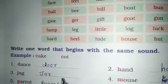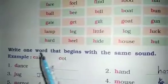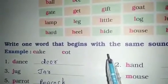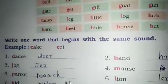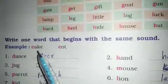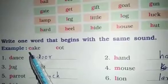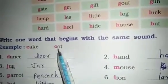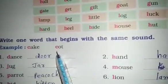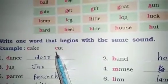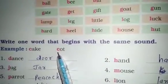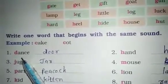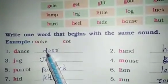Toh hameh jo exercise ab aayegi woh bhi hameh isi tarah se karni hai. Write one word that begins with the same sound. Example is cake, coat. So first letter is C and pronunciation is ko — this coat. So first letter is same ko and pronunciation is ko. So cake, coat. This is dance, door.